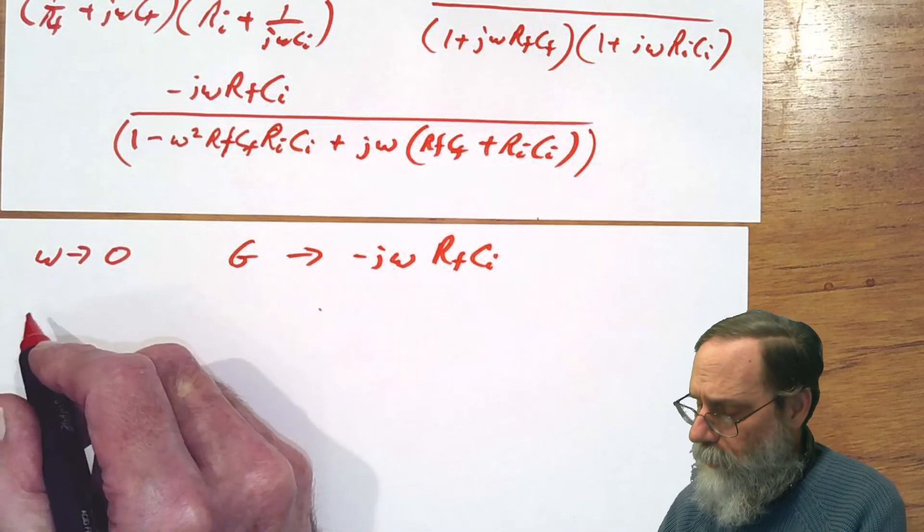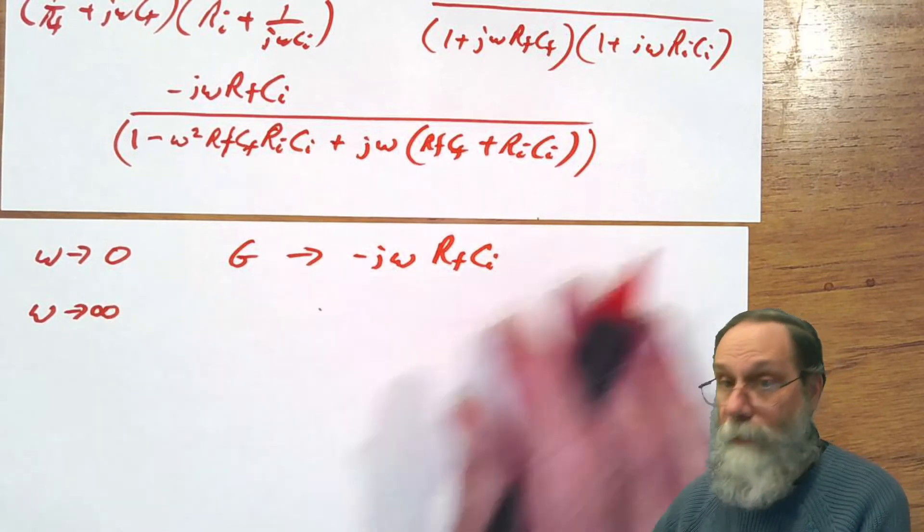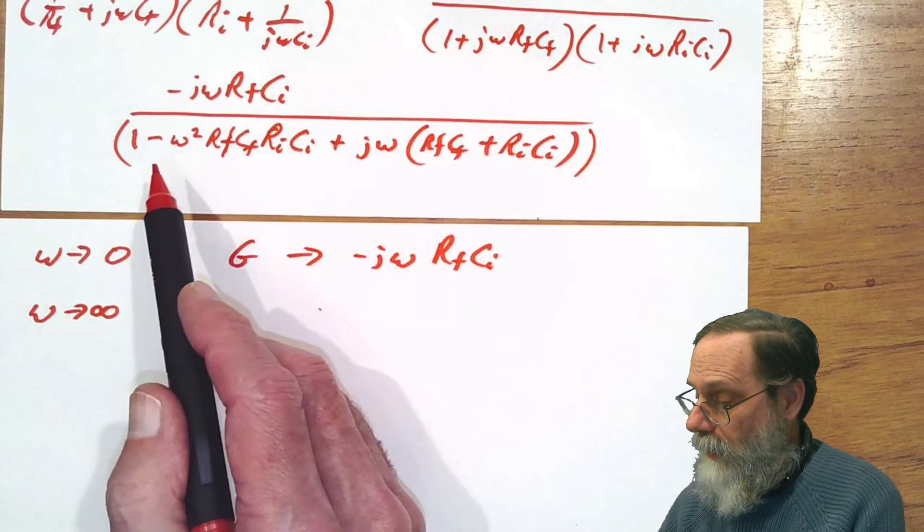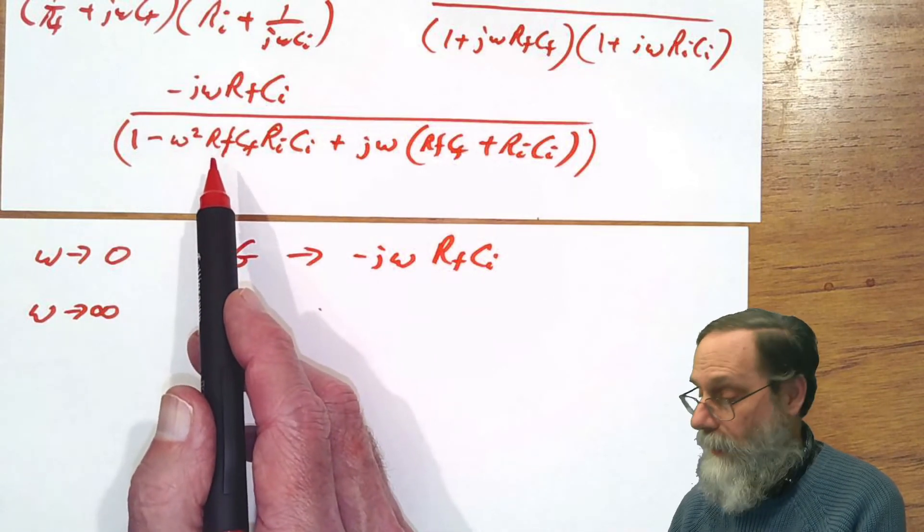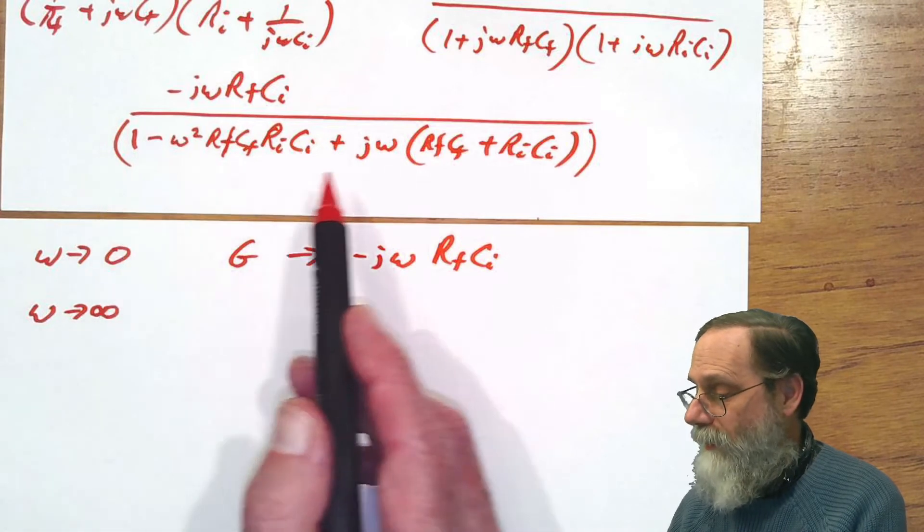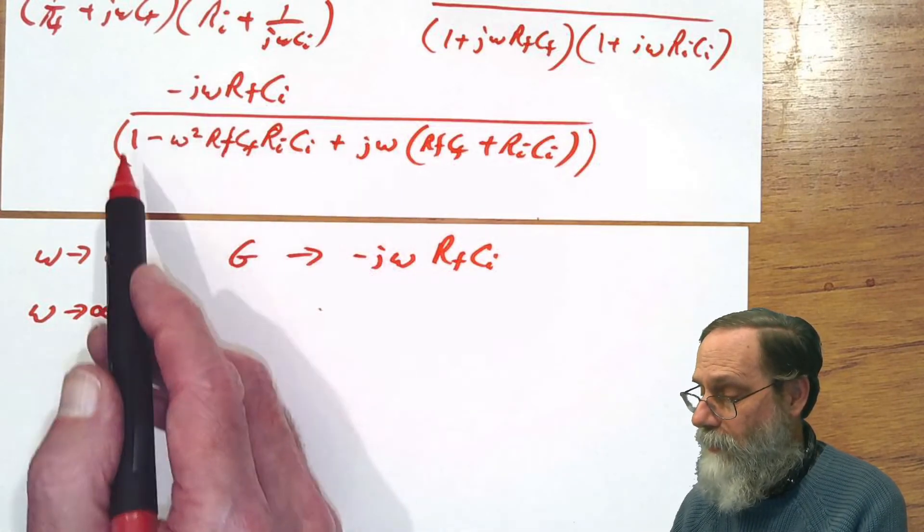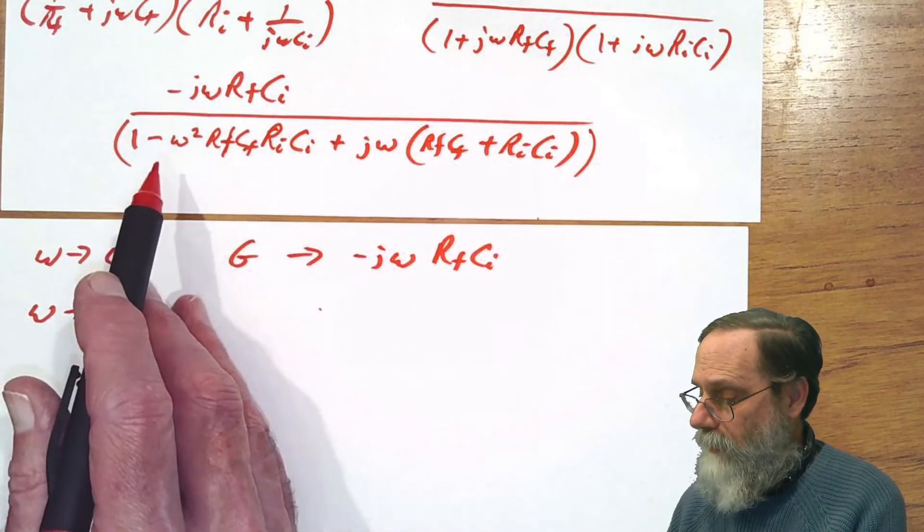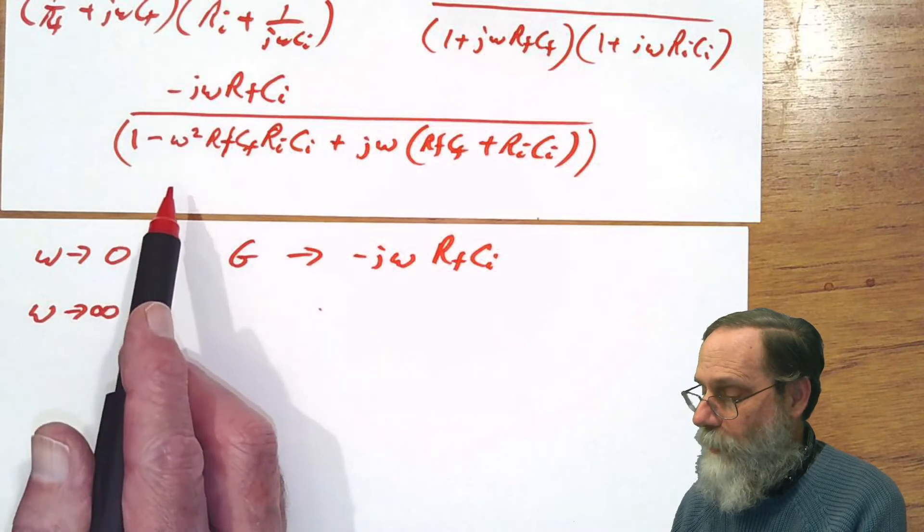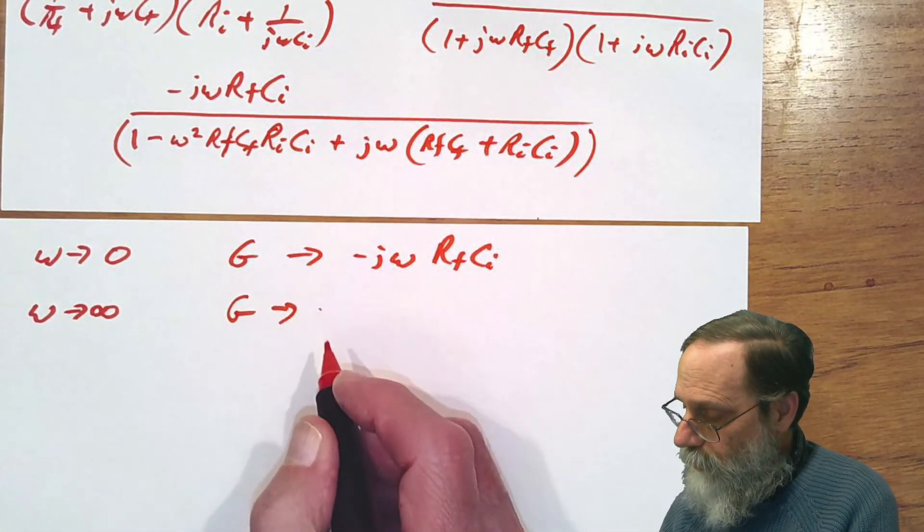What happens as omega goes to infinity? If we go back to looking at this on the bottom, the omega squared grows faster than anything else. The one and the j omega don't grow nearly as fast. So if omega goes to infinity, we can approximate it to just the omega squared term on the bottom. Then we can take a look at what's top and bottom, cancel stuff out, and we get that the gain goes to...